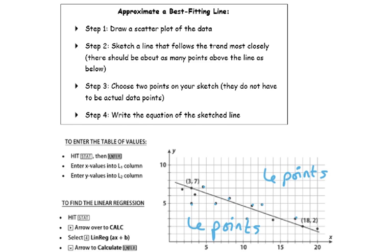Step three: choose two points on your sketch. They don't have to be actual data points. Here they've given us points (3, 7) and (18, 2). You can use your calculator where you put those points into a table or list.